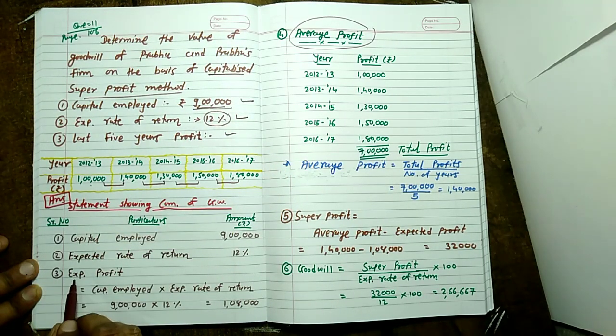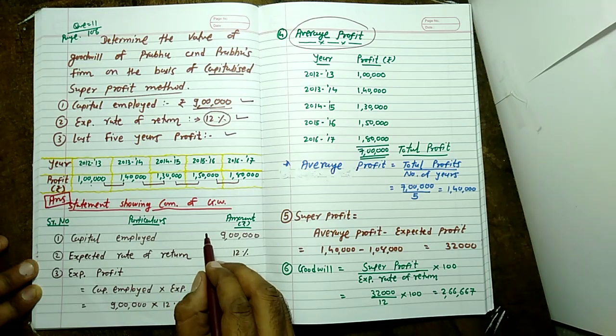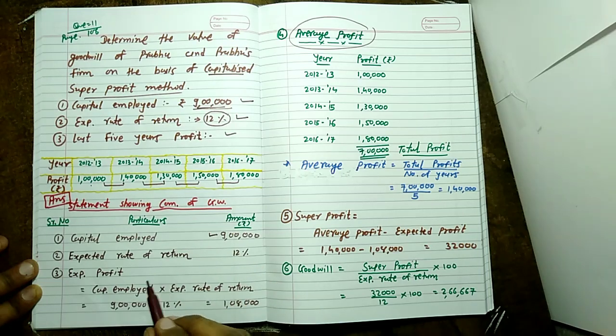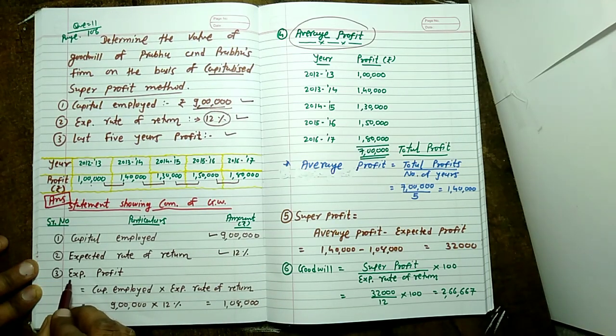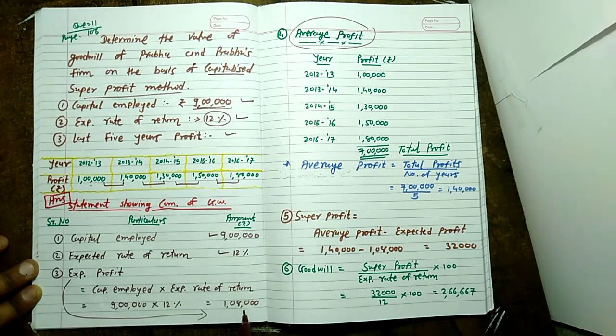Step number three: expected profit equals capital employed into expected rate of return. Capital employed 9 lakh and expected rate of return 12 percent, so your answer expected profit 1 lakh 8,000.